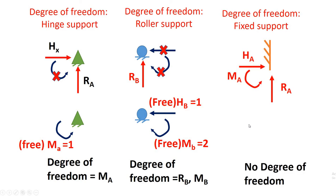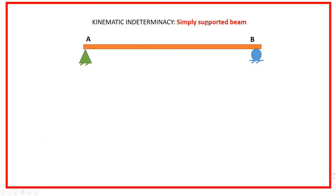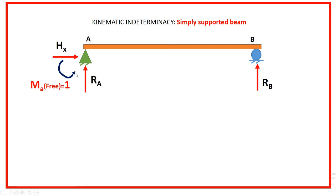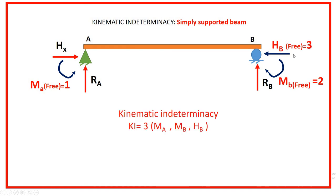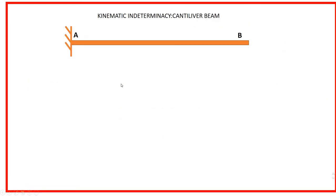Fixed support can resist all three reactions, so no degree of freedom for fixed support. Now let us move to the kinematic indeterminacy of different types of beams. For a simply supported beam, the hinge support has two reactions and the roller support has one reaction. The free reactions are moment at support A, moment at support B, and horizontal reaction at support B. So the kinematic indeterminacy of a simply supported beam is three.